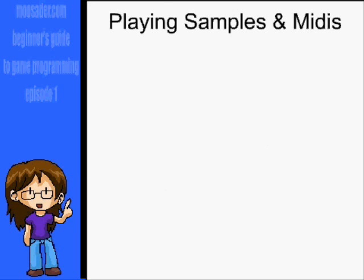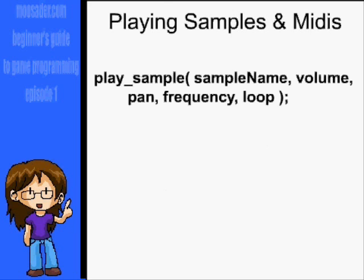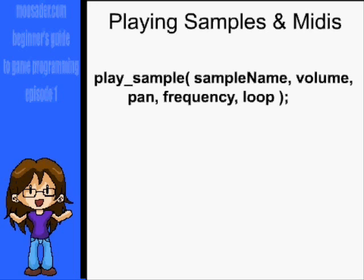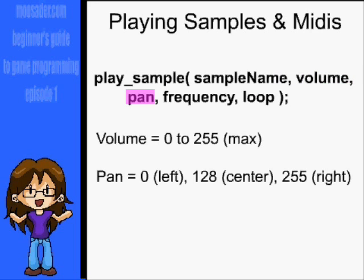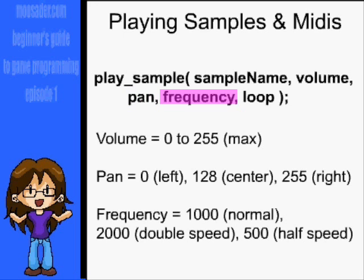To play a sample, use the play_sample function. The parameters are: the sample file, the volume which ranges from 0 to 255, the sound pan with 0 being the left speaker, 255 being the right speaker, and 128 being in the middle, and frequency which is the playback rate with 1000 being normal speed, 500 being half speed, and 2000 being double.